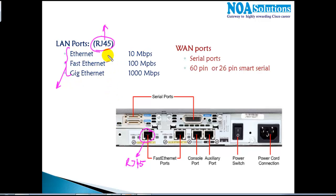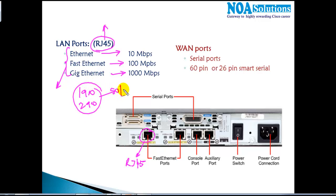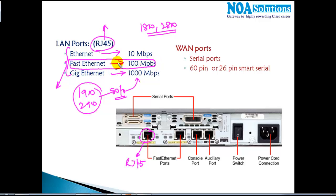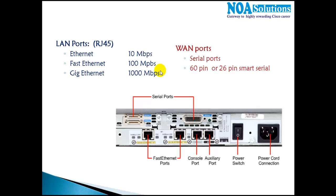LAN ports support different speeds: some Ethernet ports support 10 Mbps, Fast Ethernet ports support 100 Mbps, and newer routers like the ISR G2 1900 and 2900 series also have Gigabit Ethernet interfaces supporting 1000 Mbps. Most 1800 or 2800 series routers support Fast Ethernet as the default, while older 2500 series routers may have standard Ethernet ports.